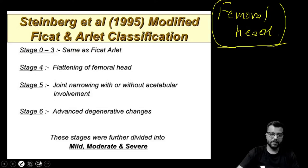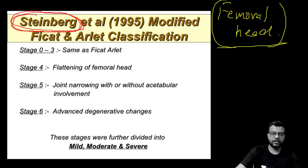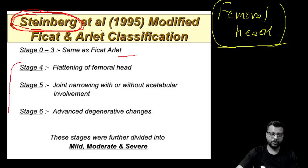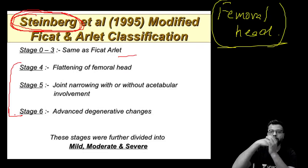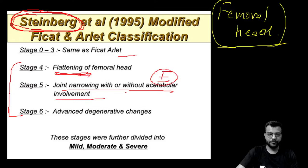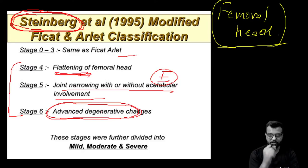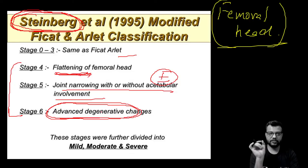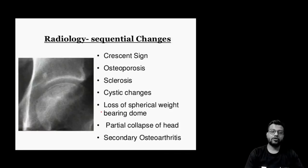The Steinberg classification, also called the modified Ficat and Arlet classification, has six stages. Stages 0 to 3 are the same as Ficat. In Stage 4, there is flattening of the femoral head. In Stage 5, there is osteoarthritic narrowing of the joint and possible acetabular involvement. Stage 6 shows very advanced degenerative changes. For exams, remember the Ficat and Arlet classification and the name of this extended version: the Steinberg classification.